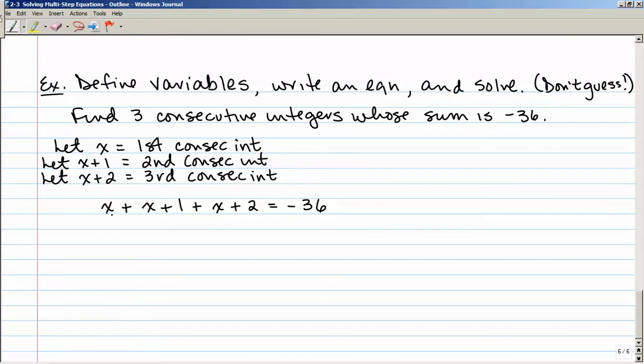Now, let's combine like terms to solve this. I have x plus x plus x, which gives me 3x. 1 plus 2 gives me 3, equals negative 36. And now I have a multi-step equation to solve. I'll start by subtracting 3 on both sides. So 3x equals a negative 39. And then dividing both sides by 3, x equals a negative 13.